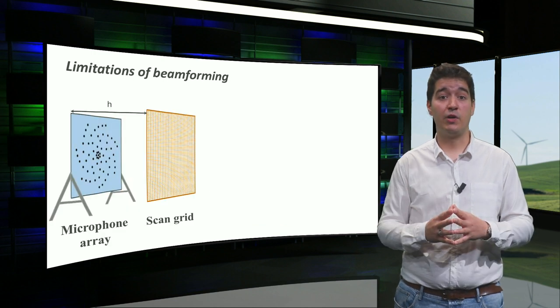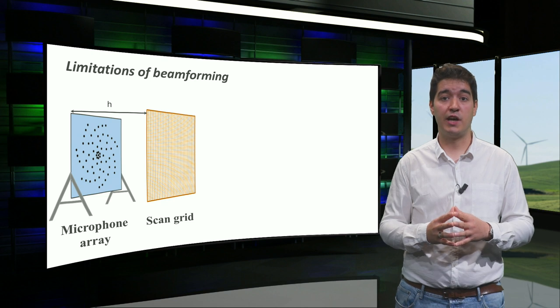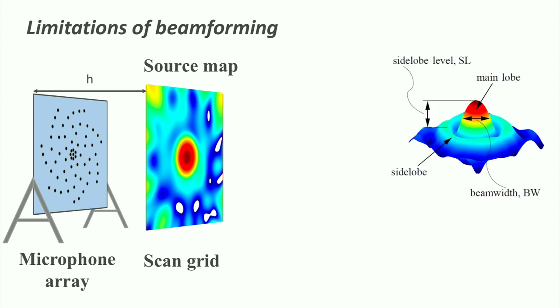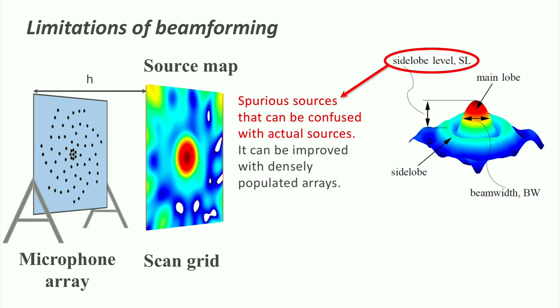As an example, imagine that we have a single sound source on our scan grid. A typical beamforming source map will look like this. You can see that this method has some limitations, as we said before. First of all, there are some side lobes or spurious sources that could be confused with actual sources. This can be improved by using densely populated arrays.